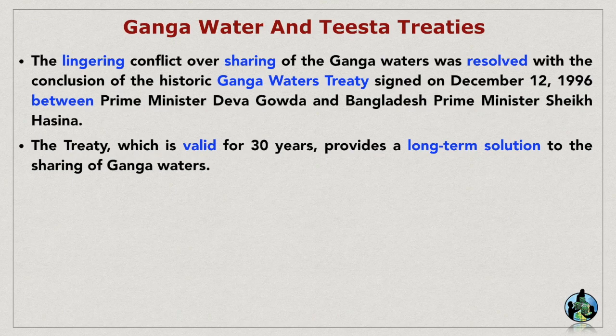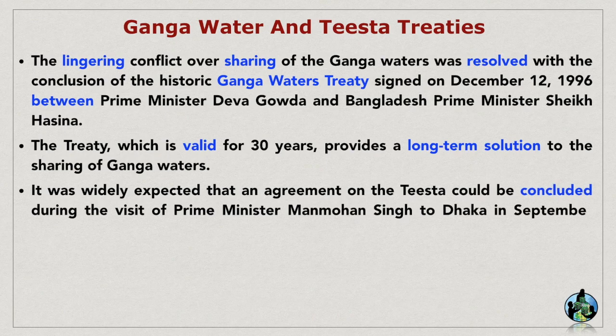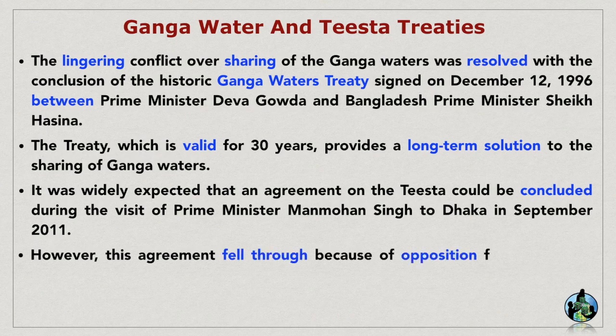It was widely expected that an agreement on the Tista could be concluded during the visit of Prime Minister Manmohan Singh to Dhaka in September 2011. However, this agreement fell through because of opposition from the Chief Minister of West Bengal.